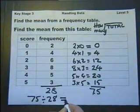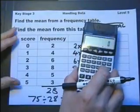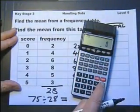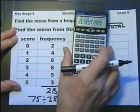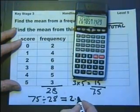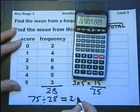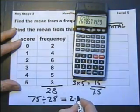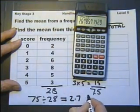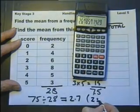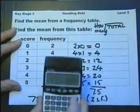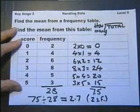Which we would use a calculator for. 75 divided by 28. The calculator gives an answer of 2.67857. So we just call it 2.7 to two significant figures. Calculating the mean from a frequency table.